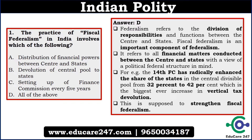Federalism basically means division of responsibilities and functions between center and states, and fiscal federalism is an important component of federalism. In fiscal federalism, all financial matters conducted between center and state — keeping the political federal structure in mind — are regulated. In the 14th Finance Commission there was a major change: earlier only 32% of central divisible pools were going to the states, but after that 42% goes to the states, which boosts fiscal federalism and empowers states to take their own decisions.